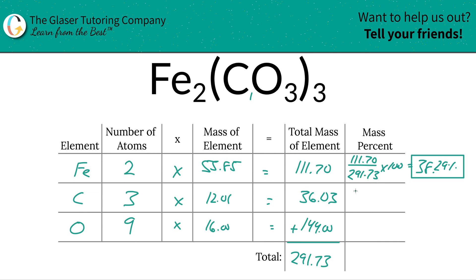Next thing we're going to do for carbon, so this is going to be 36.03, total mass of that carbon divided by the total mass of the compound, 291.73, hence why we had to find the total mass first. And that percentage is going to be roughly about 12.35%.